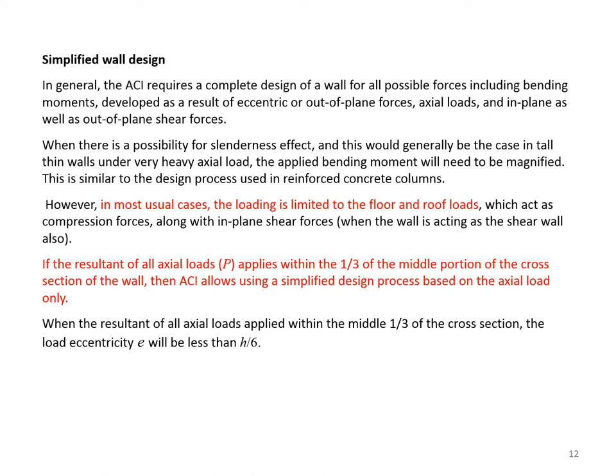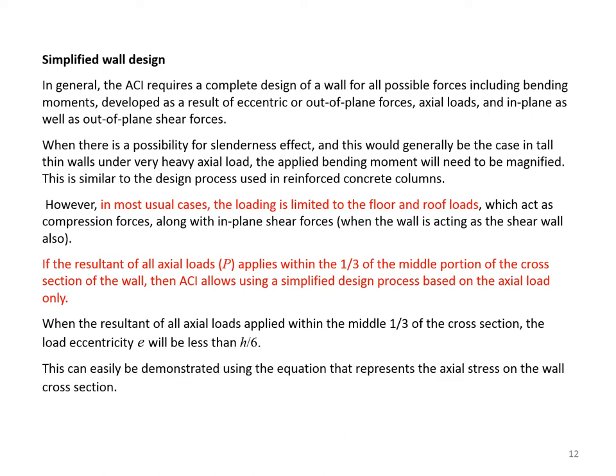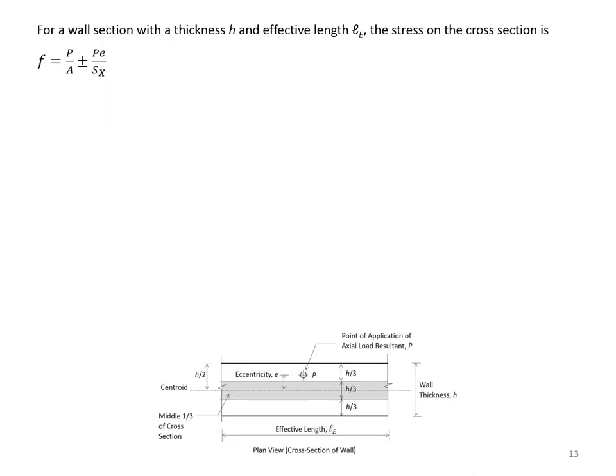When the resultant of all axial loads is applied within the middle third of the cross section, the load eccentricity E will be less than h/6. This can be demonstrated using the equation for axial stress on the wall cross section. For a wall section with thickness h and effective length LE, the stress is F = P/A ± PE/SX, where P is the axial load and E is the eccentricity.